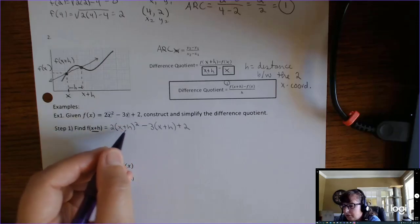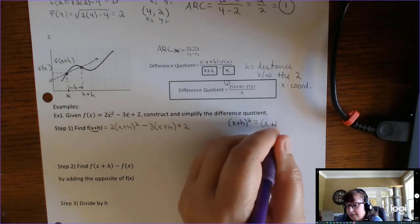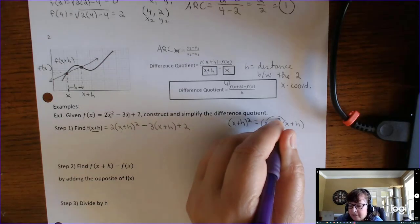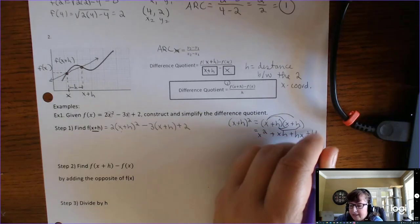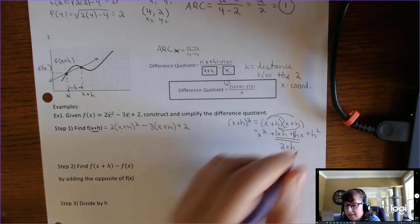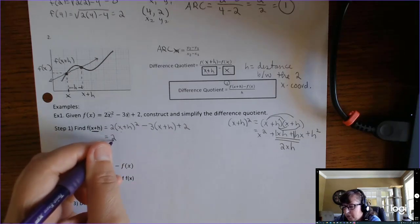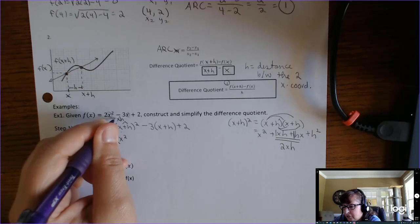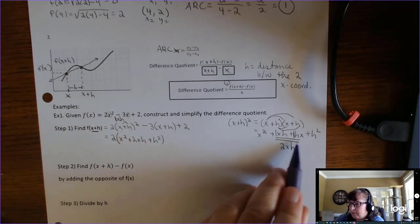You have to handle the exponent first because of PEMDAS. x plus h quantity squared means x plus h times x plus h. FOILing gives x squared plus xh plus hx plus h squared; the middle terms are like terms and combine to 2xh. So square-double-square: write the two, square x to get x squared, multiply x and h and double it to get 2xh, then square h to get h squared.